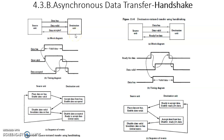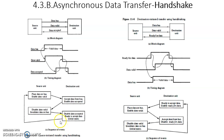The drawback of strobe control is that the destination unit is not acknowledging the source unit. That drawback is eliminated with the help of a third control signal, written as 'data accepted' or 'ready for data'. With the help of this line, the drawback of non-acknowledgement is eliminated.